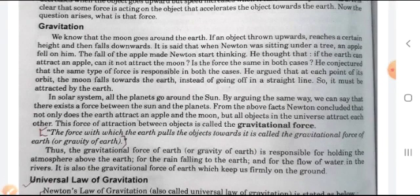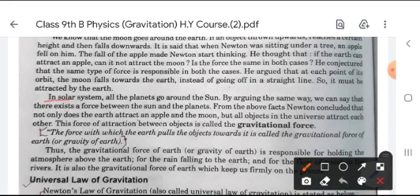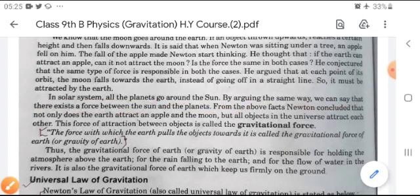He argued that at each point of its orbit, the moon falls towards the earth instead of going off in a straight line, so it must be attracted by the earth. In our solar system, all the planets go around the Sun. Arguing the same way, we can say that there exists a force between the Sun and the planets. From the above facts, Newton concluded that not only does the earth attract an apple and the moon, but all objects in the universe attract each other.